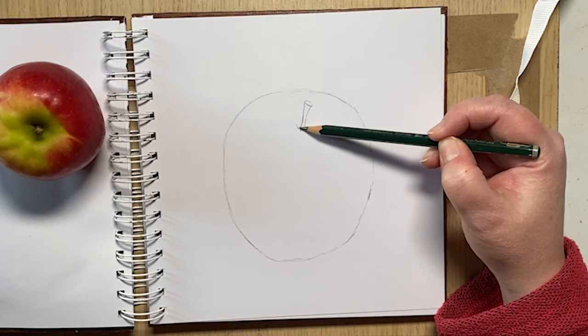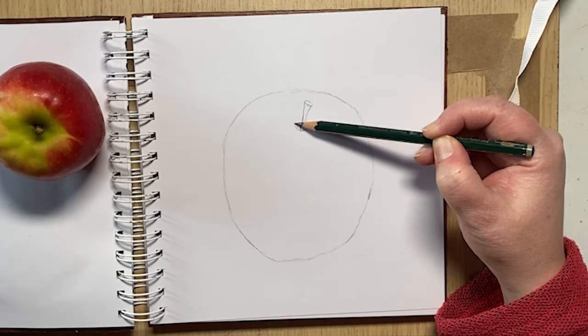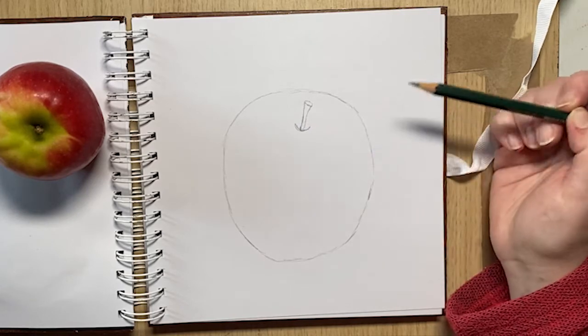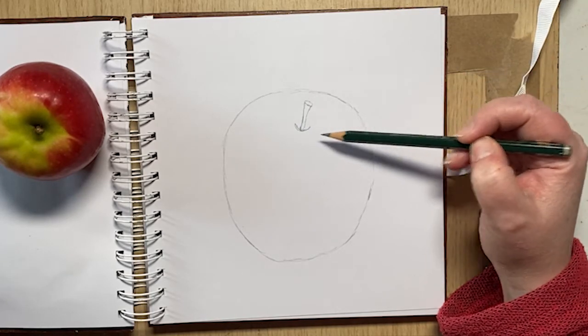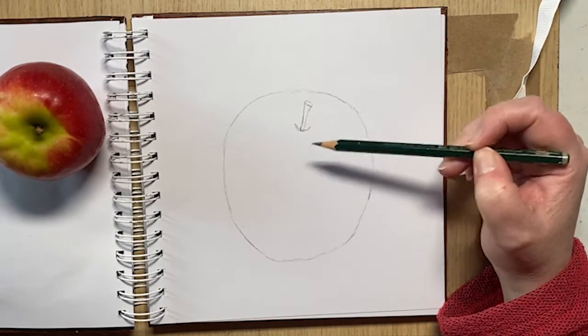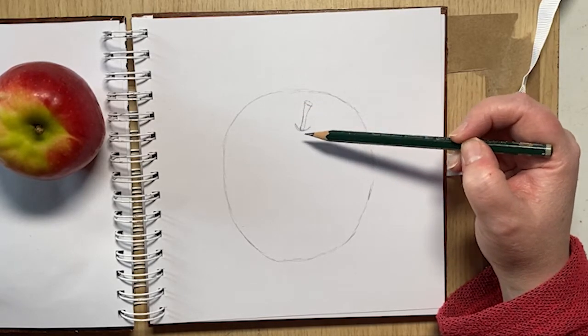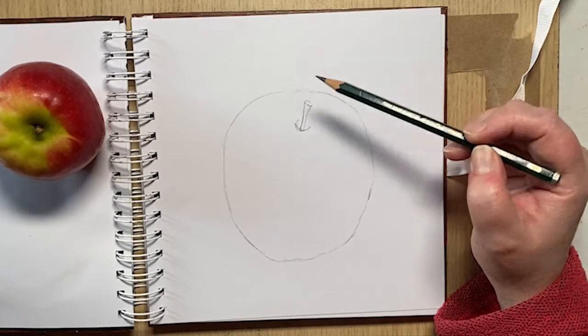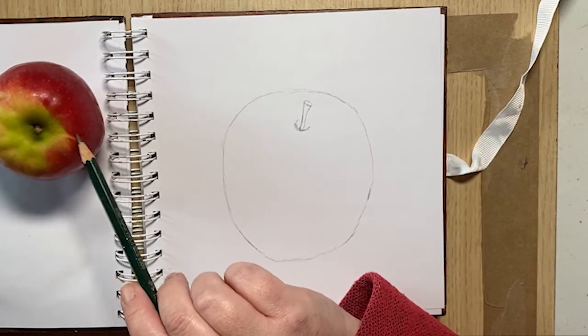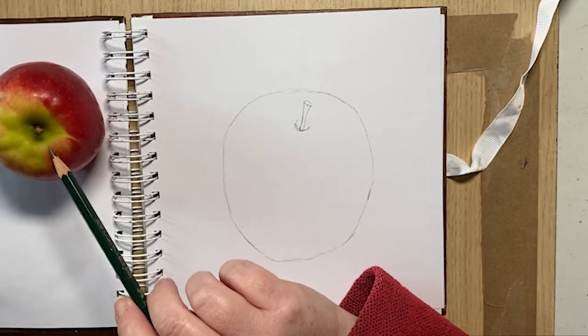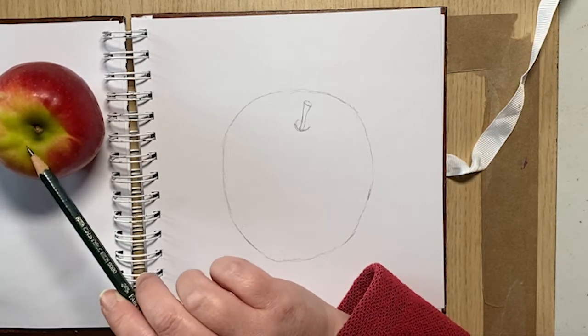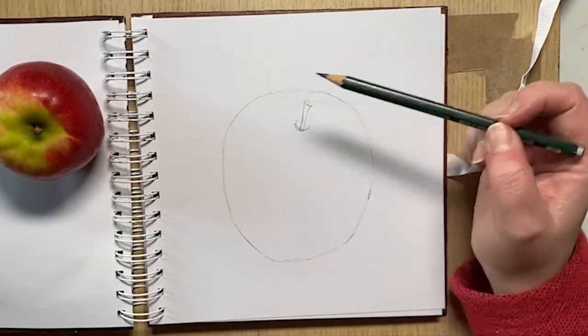And now I'm just going to put a little curve there because that's in a recess. Already, by putting that there, it's given a little bit of three dimension. Now if you look carefully at your apple as well, you'll see almost some grid lines coming down and around to give your apple some shape.